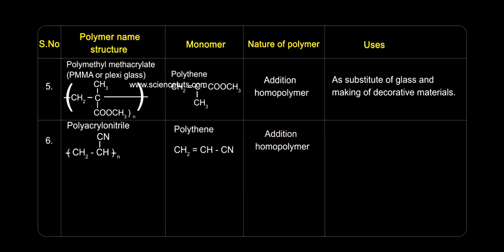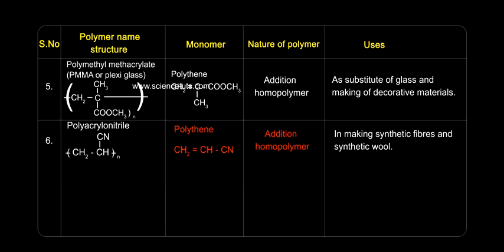Polyacrylonitrile: used in making synthetic fibres and synthetic wool.